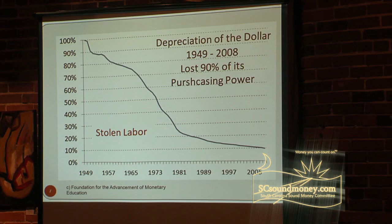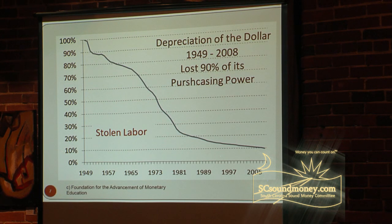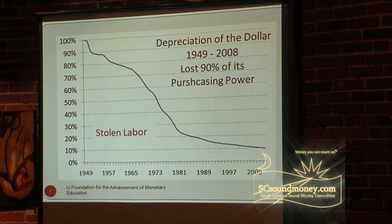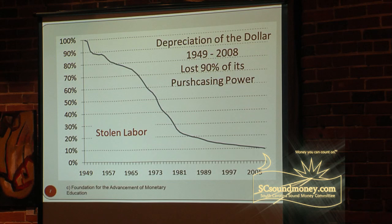When you go to work and get paid, that payment is in exchange for your labor. If the money depreciates — and you can see this fall-off in official data from the Federal Reserve — the fall-off was quite steep up until the early 1980s, then it slowed down. I'll show you in a moment how that happened.